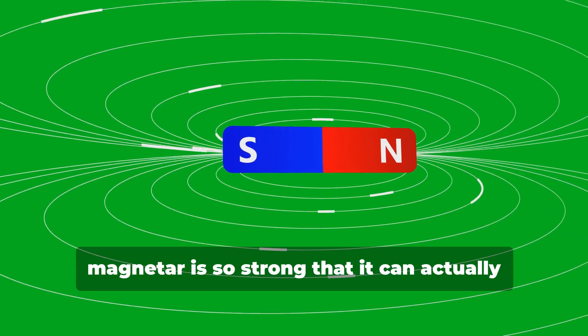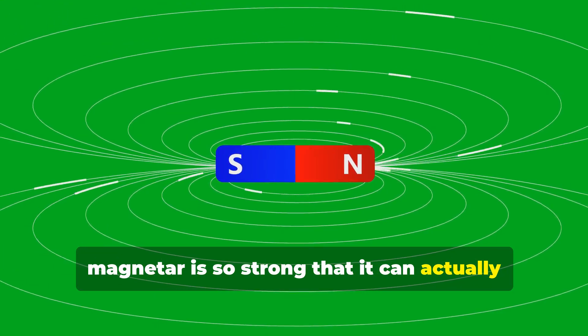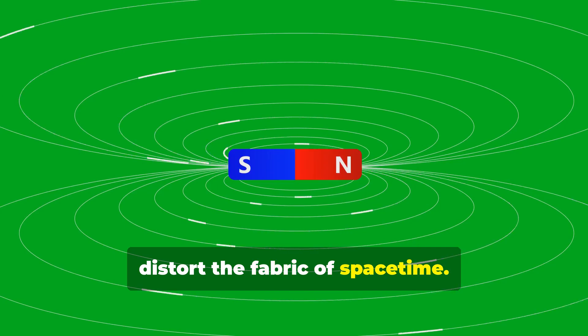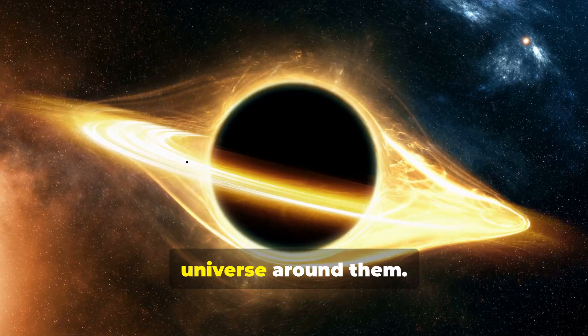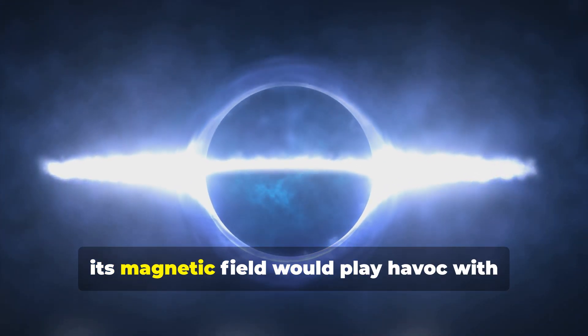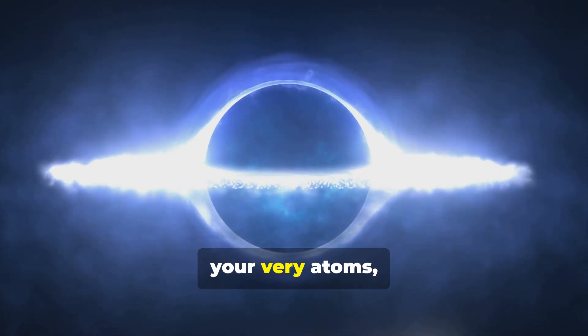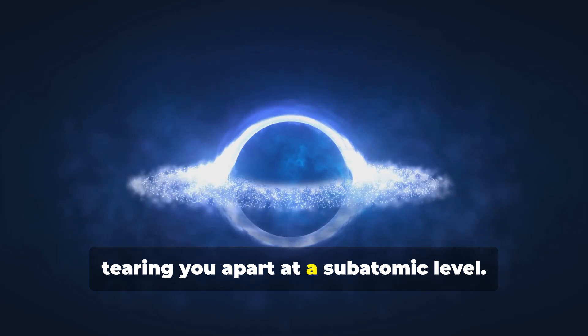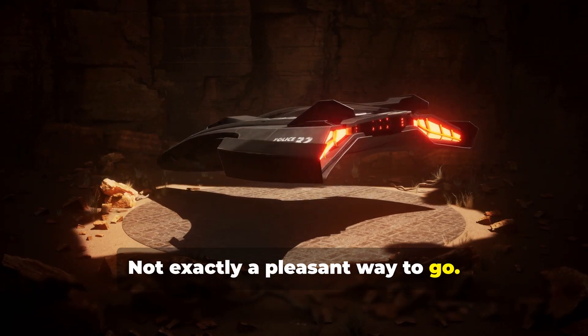The magnetic field of a magnetar is so strong that it can actually distort the fabric of space-time. That's right. These things are literally bending the universe around them. And if you were to get too close to a magnetar, its magnetic field would play havoc with your very atoms, tearing you apart at a subatomic level. Not exactly a pleasant way to go.